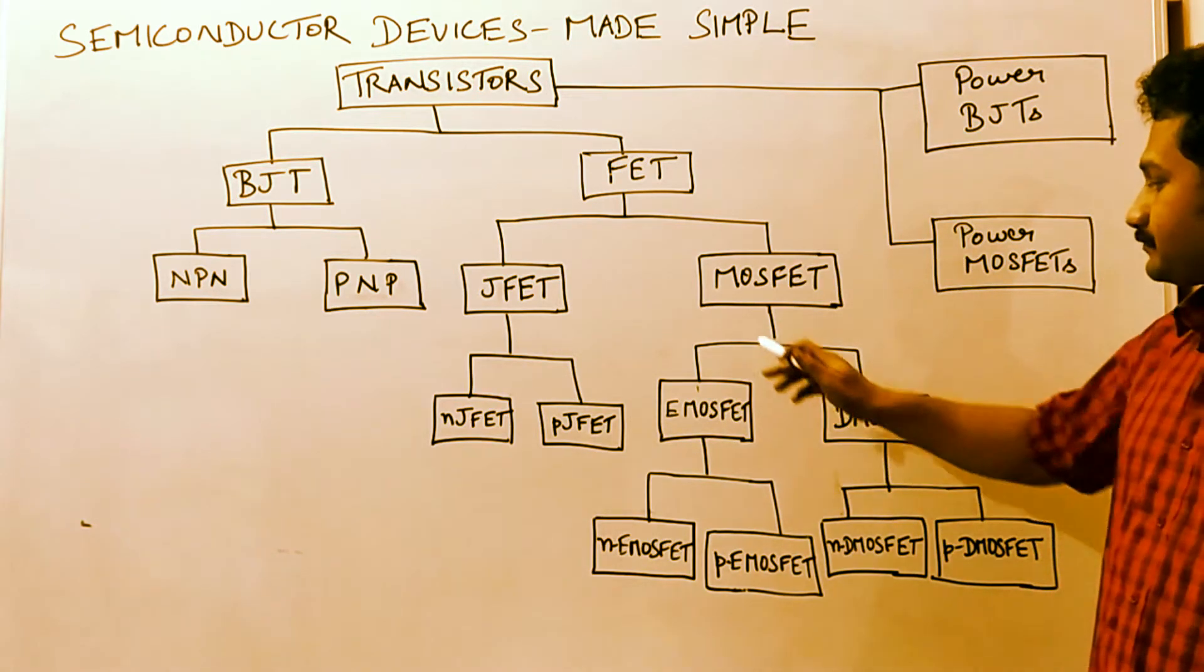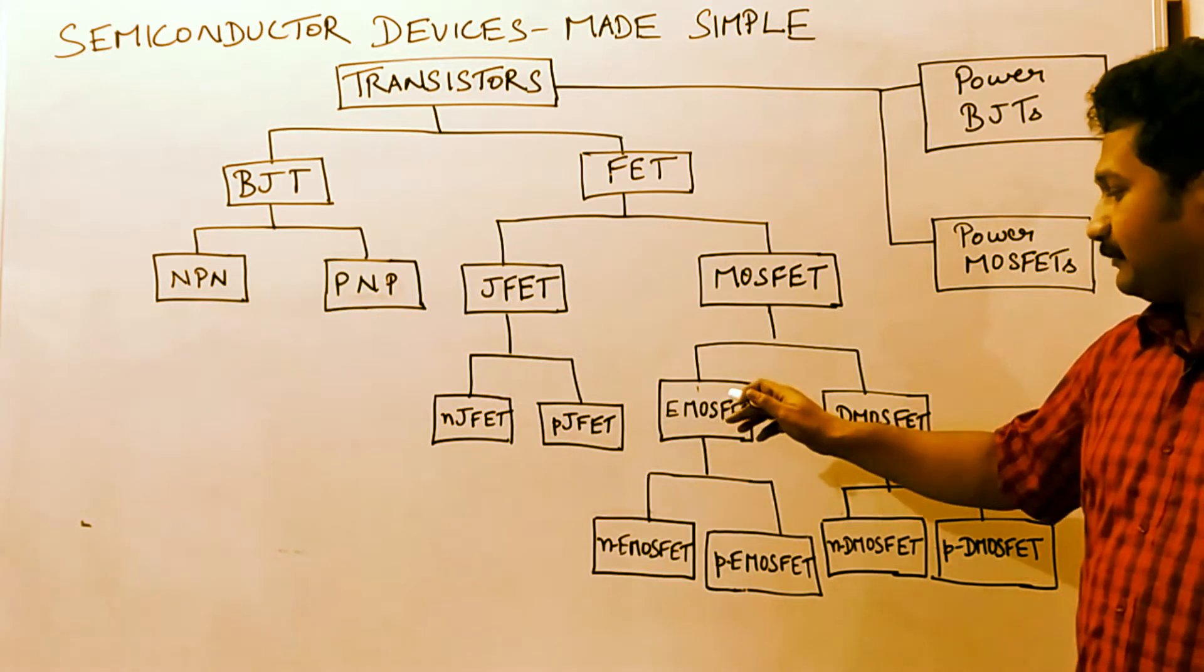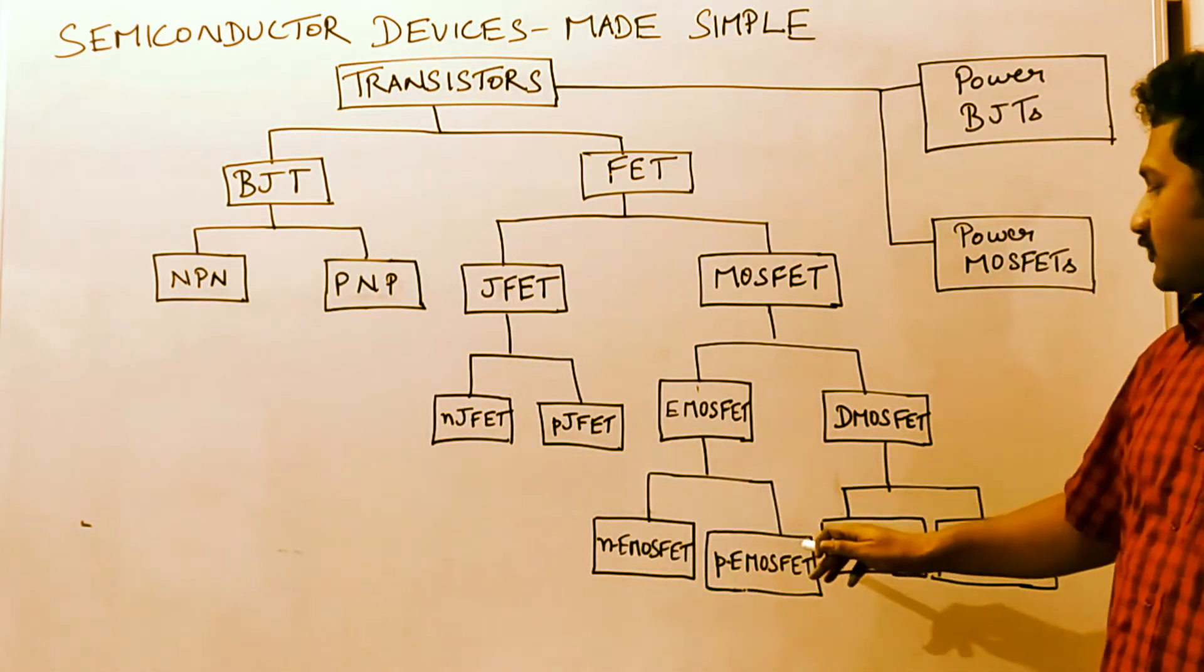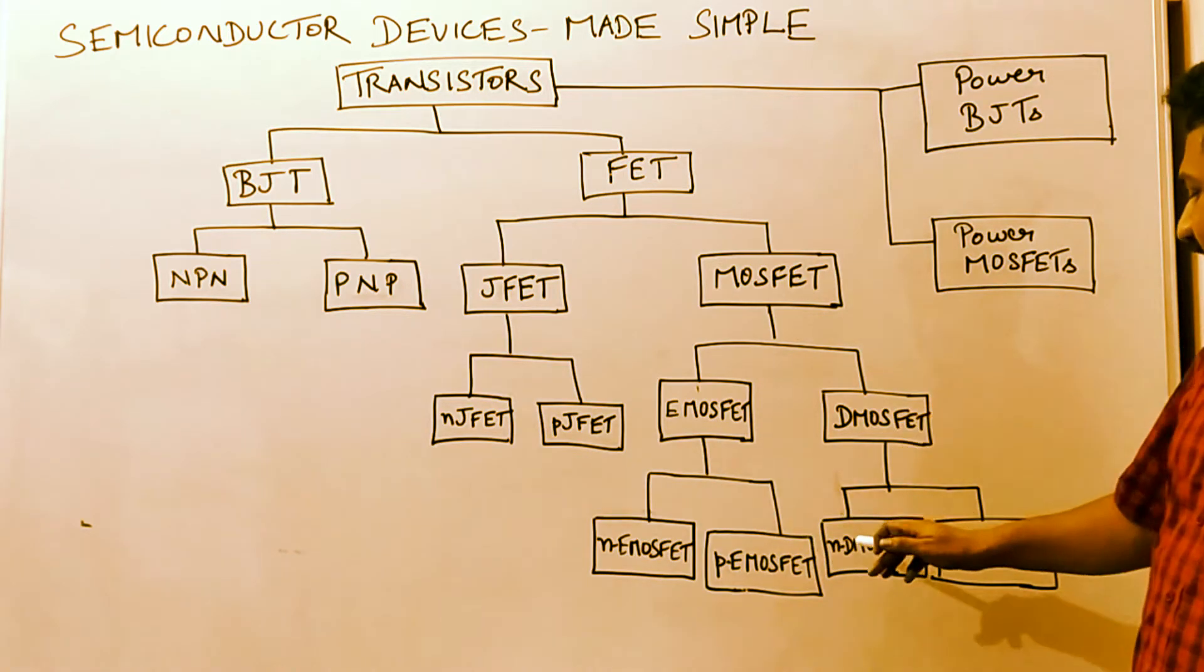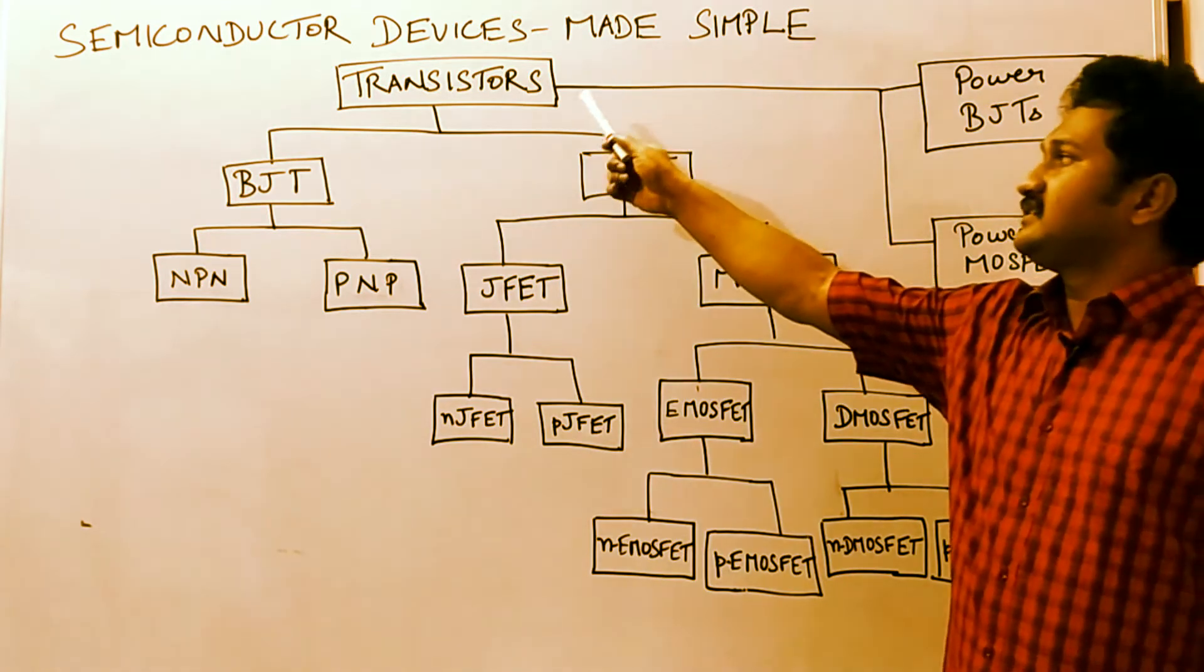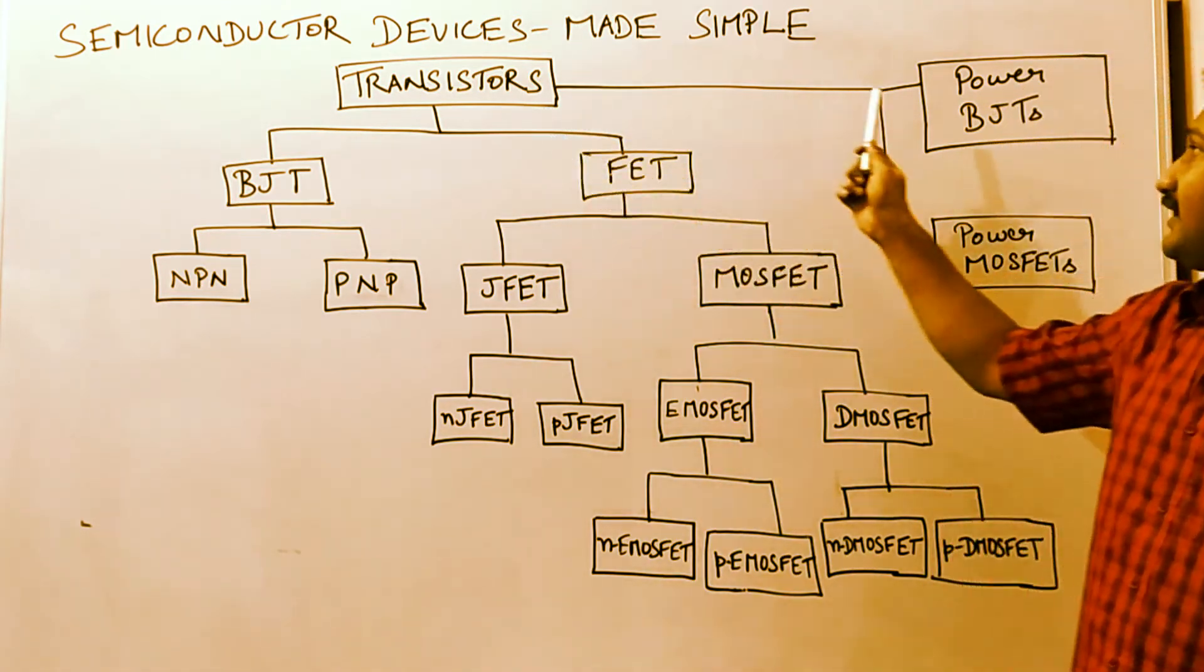E-MOSFET is further divided into two types: N channel E-MOSFET and P channel E-MOSFET. D-MOSFET has N channel D-MOSFET and P channel D-MOSFET. As I said earlier, transistors are normal transistors and power transistors.